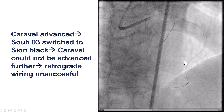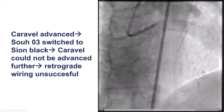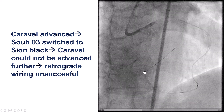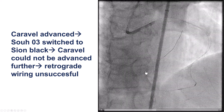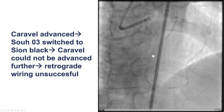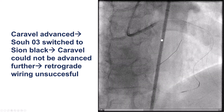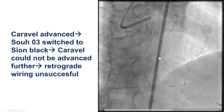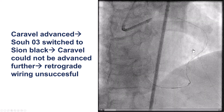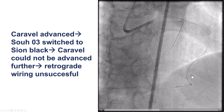We were able to advance the Keravel almost all the way to the PDA, but then had a lot of difficulty advancing it further up into the vessel. When the retrograde microcatheter cannot be advanced all the way to the distal cap, options include dilating the septal, using a different or new microcatheter, or crossing retrograde true-true-true.